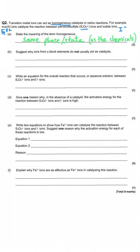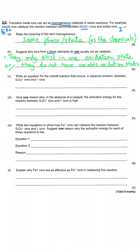Then it asks why s-block elements do not usually act as catalysts. This is similar to the previous question but from the other angle: it's because they only exist in one oxidation state, unlike transition metals. We can simply say they don't have variable oxidation states.